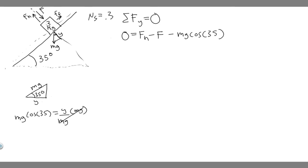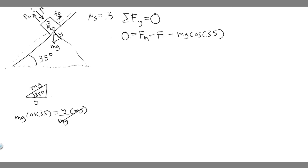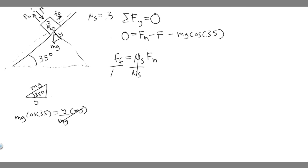Now we have our equation, and we know mg·cos(35°), but we don't know F sub N yet. We need all the numbers to solve. So how do we find F sub N? We're given μ sub s for a reason. We know that the frictional force equals μ sub s times F sub N. So if we want to find F sub N, we take the frictional force and divide by μ sub s — but we need to find the frictional force first.